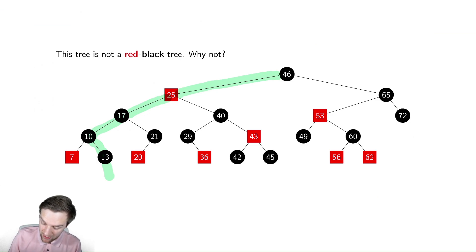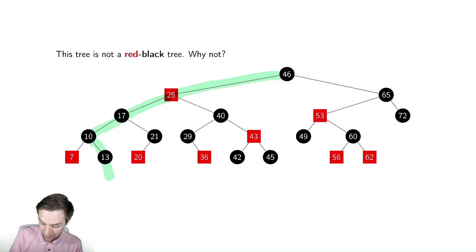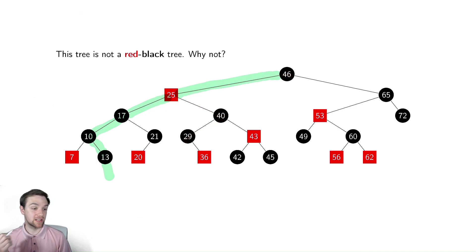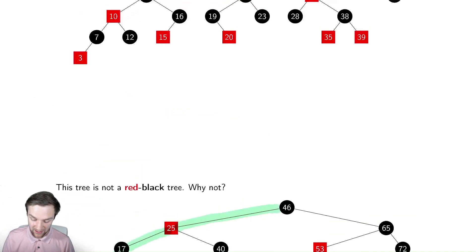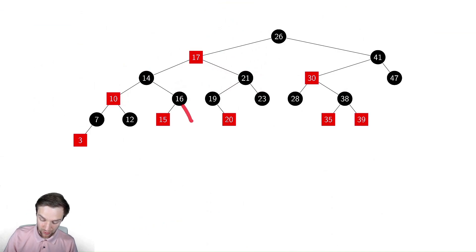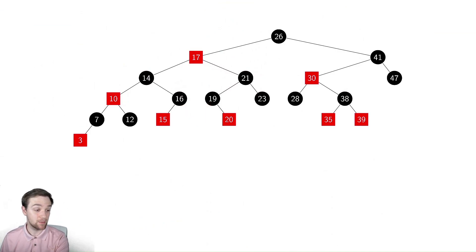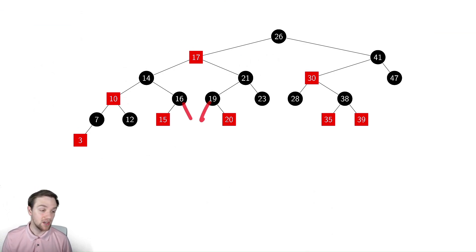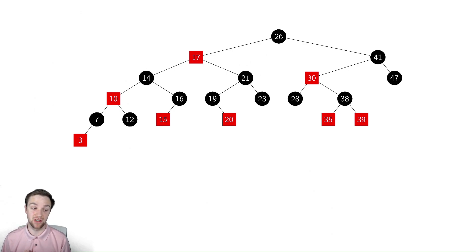One thing to note is I was counting those extra nil leaves. You don't have to, as long as you are careful. For this path — 46, 40, 29, then down to this empty nil pointer — I would need to make sure to count that. This is where I wanted to mention that we need to be careful for these internal nodes with one child. When we're checking whether it is a red-black tree, we still need to consider those nil pointers and make sure we check those paths for the color property.